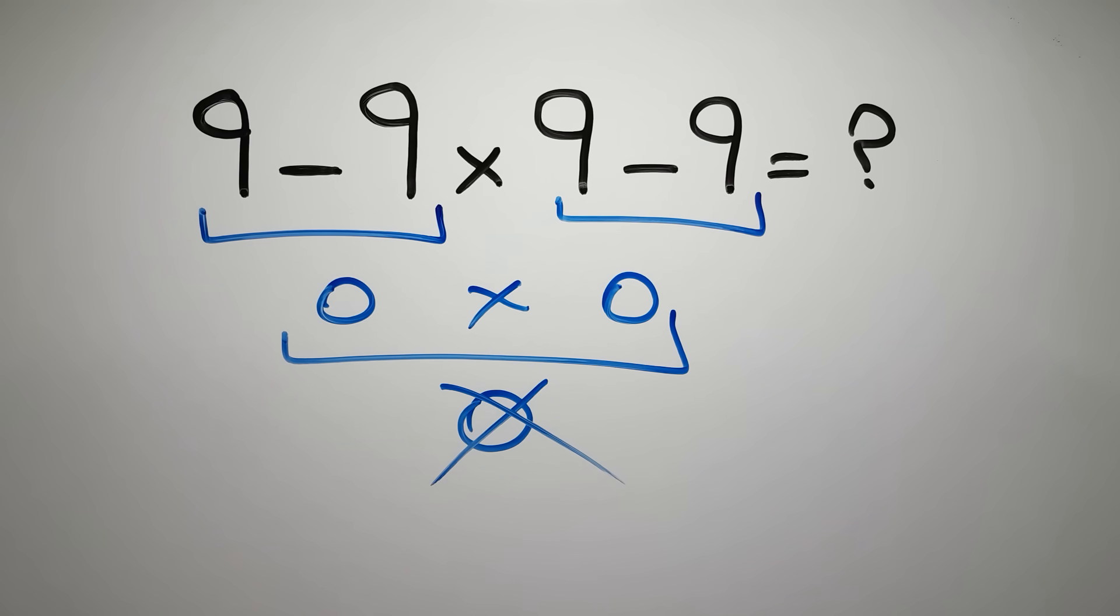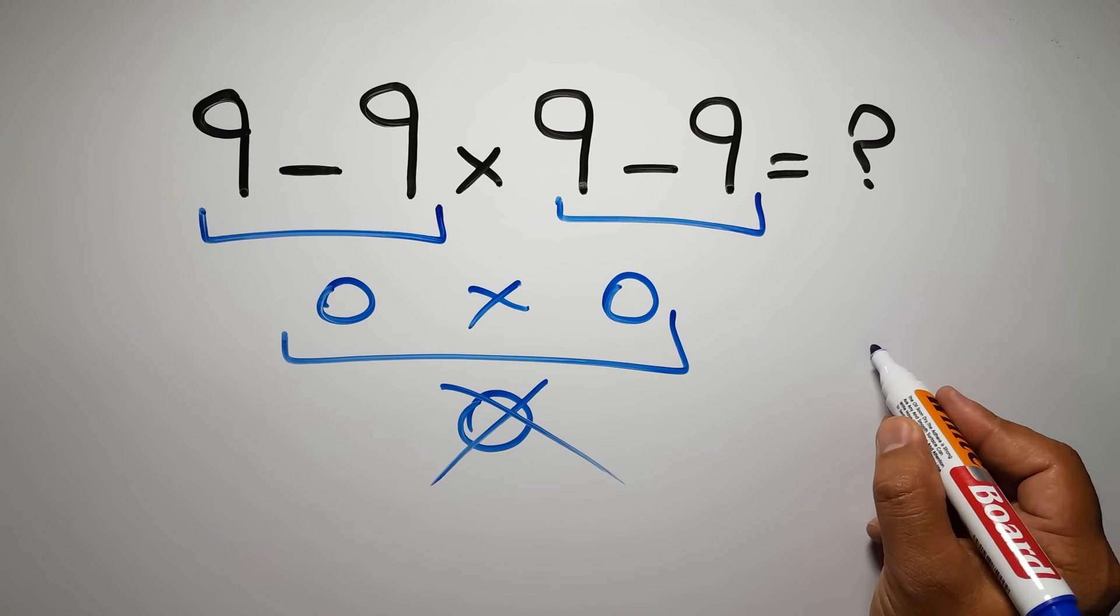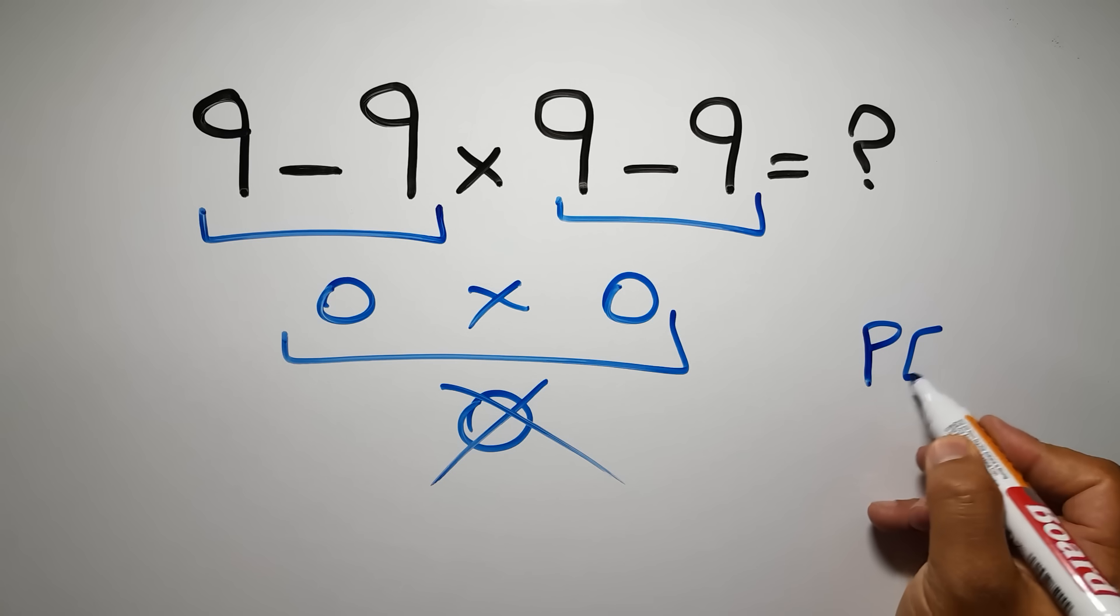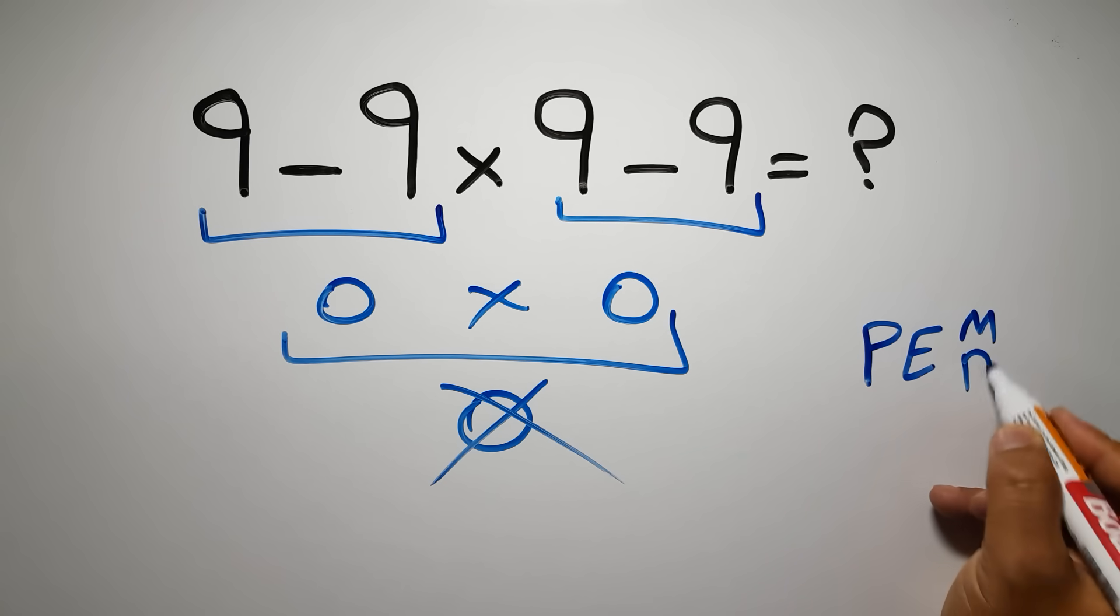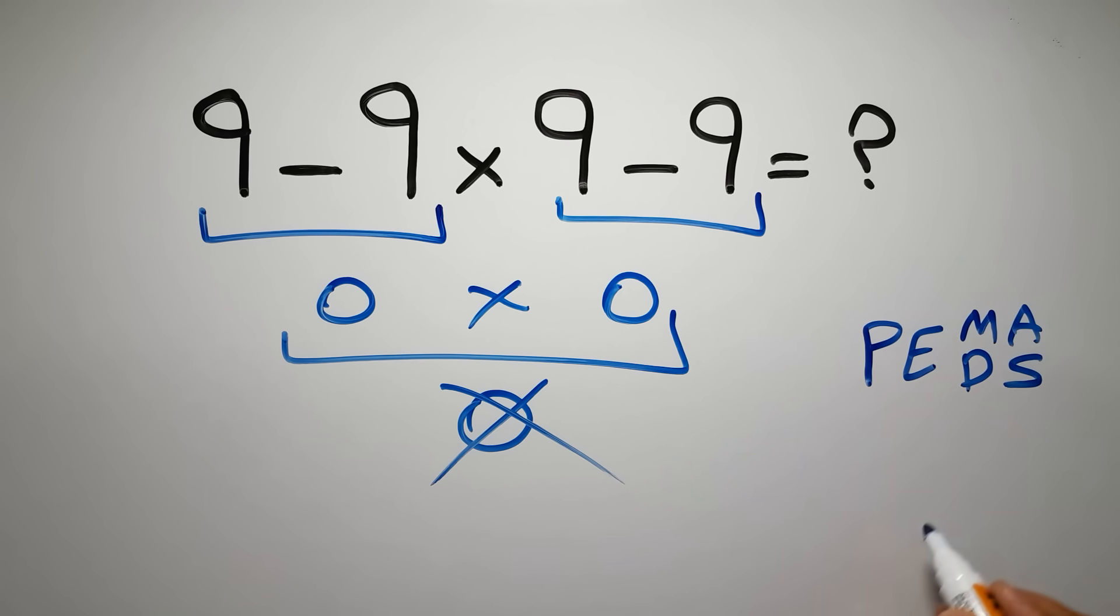Because according to the order of operations, first we have to do parentheses, then exponents, then multiplication or division, and finally addition or subtraction. Remember that multiplication and division have equal priority and we have to go from left to right, and the same applies to addition and subtraction.